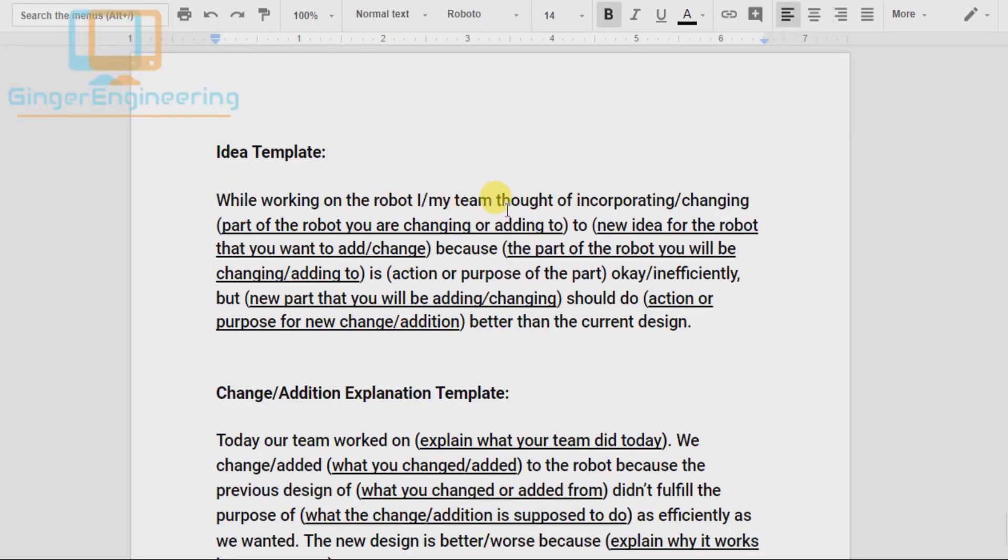I thought of incorporating or changing blank. That's where you write which part of the robot you want to incorporate or change to. Then you write what you're changing the robot to, so the new idea that you have. Then you write why.